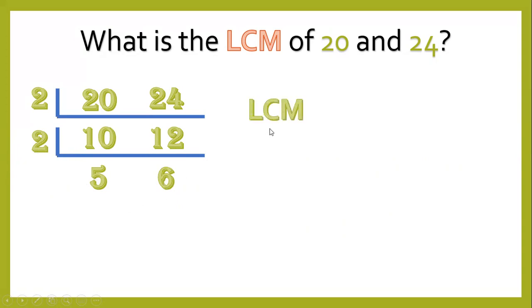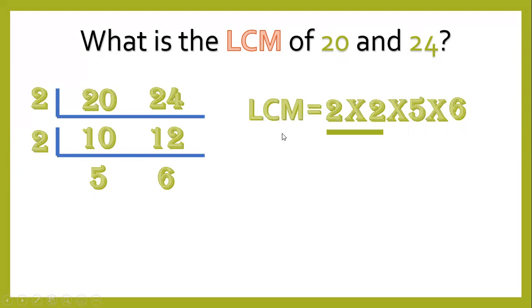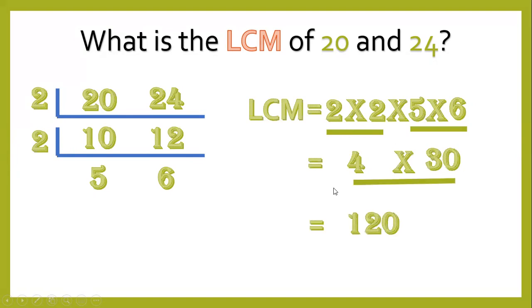So LCM equals 2 times 2 times 5 times 6. 2 times 2 equals 4; 5 times 6 equals 30; 4 times 30 equals 120. So 120 is the final answer.